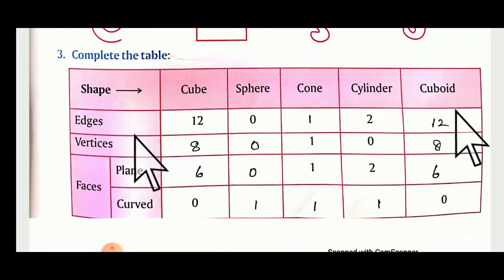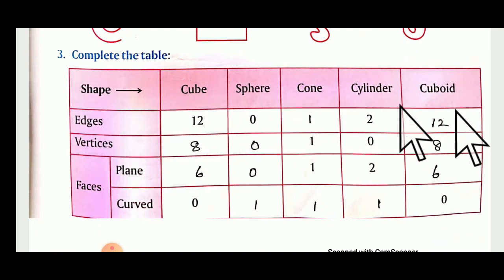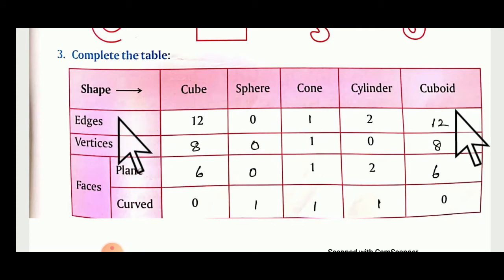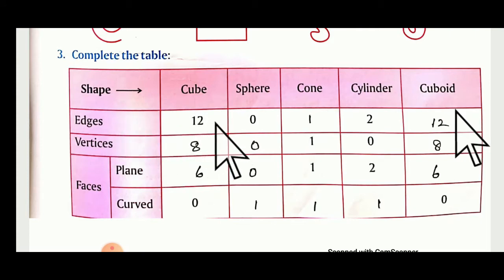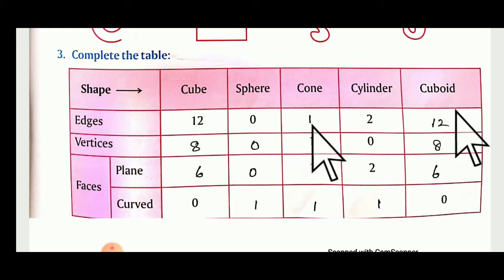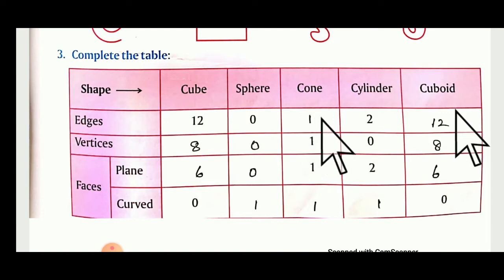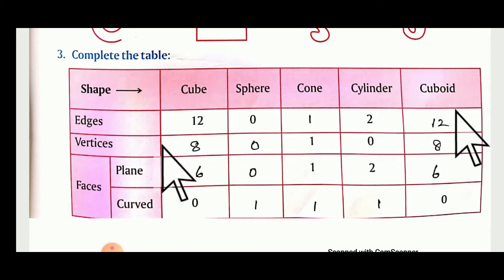Complete the table. Edge shapes are given: cube, sphere, cone, cylinder, and cuboid. Edges: a cube has 12 edges, sphere has 0 — because it is a circle shape. Cone has only 1, cylinder has 2, whereas cuboid has 12.